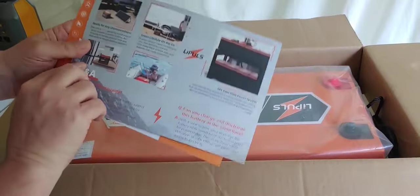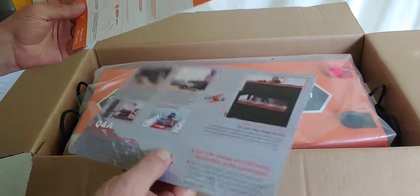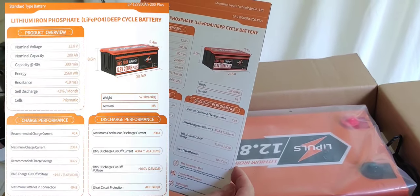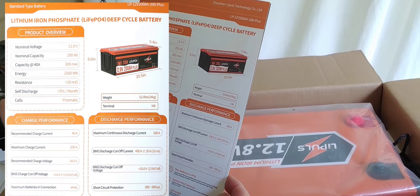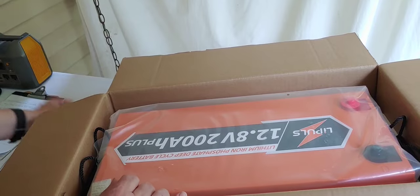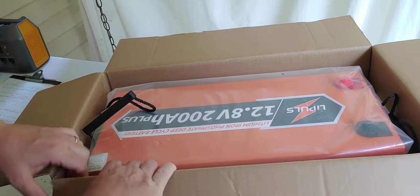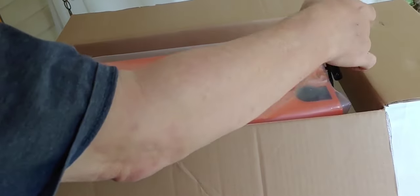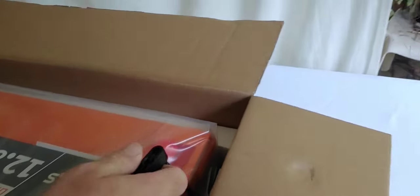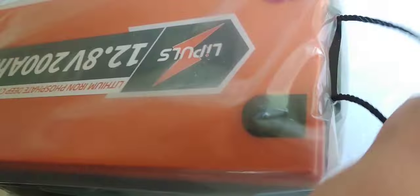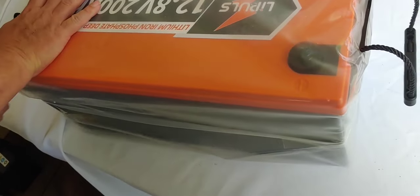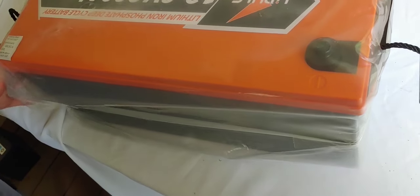Two little cards. I don't know if that's all the manual we're going to get. I'll give you a moment to look at it so you can take your time. This is a 12.8 volt and 200 amp hour battery, and it's a pretty big piece of equipment here. Let's go ahead and get it out. And there it is. It's covered in this plastic, which we'll go ahead and take off.